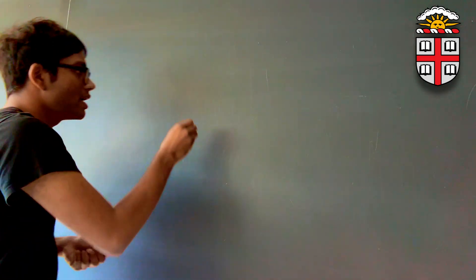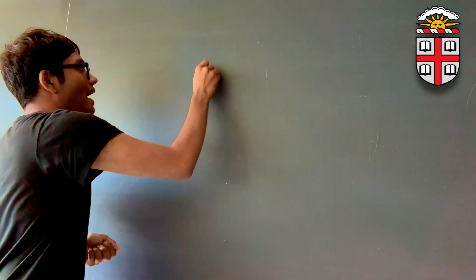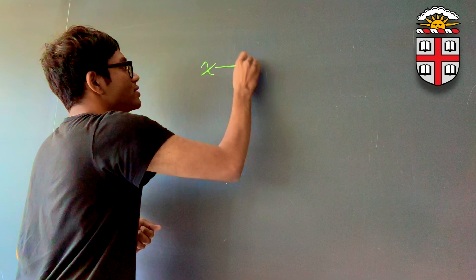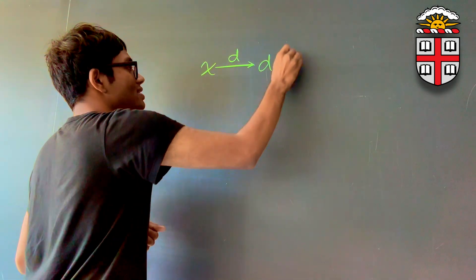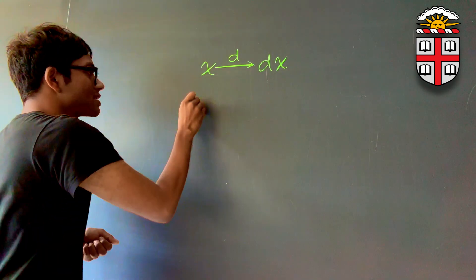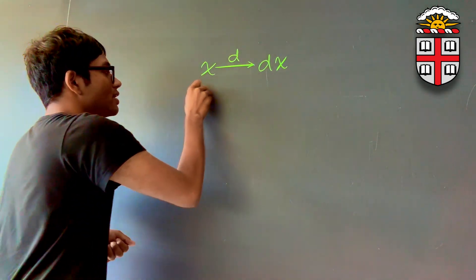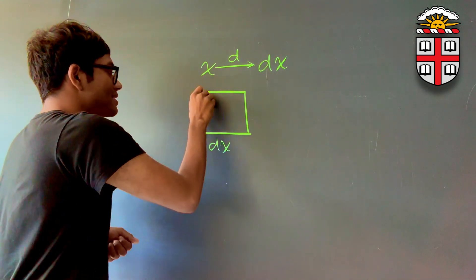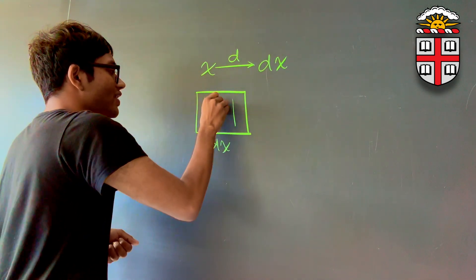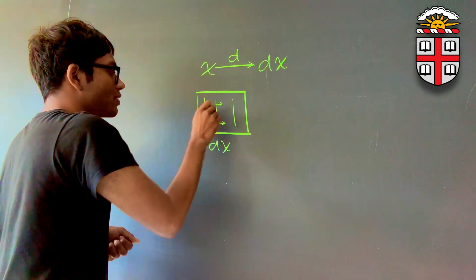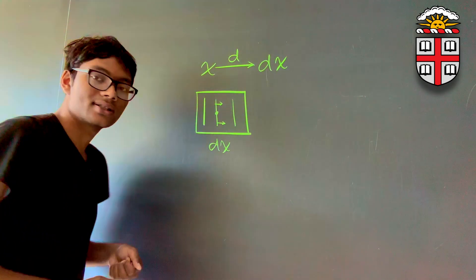So let's recap what we did previously. Remember that we had x as some kind of a variable, and the operator d turns x into a small infinitesimal change in x. But in the last lecture, what we discovered is that dx is no longer an infinitesimal change in x. dx is actually a co-vector field.